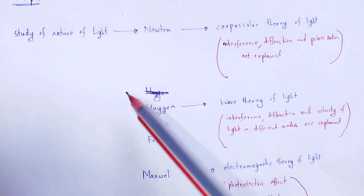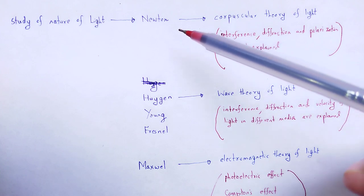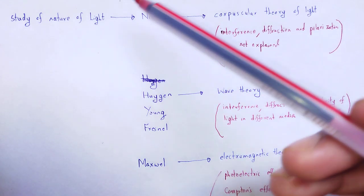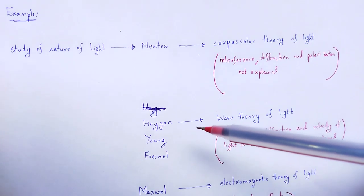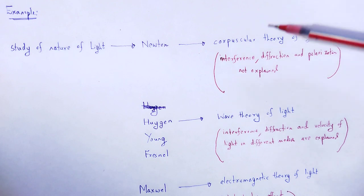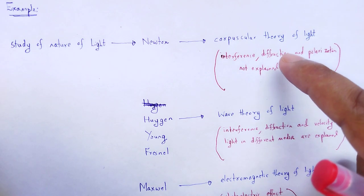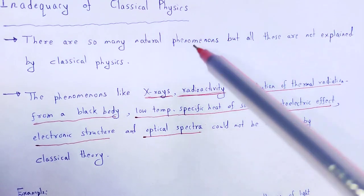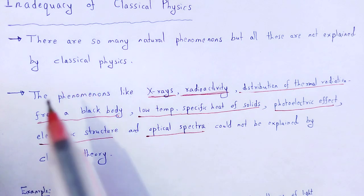This is an example of how the study of the nature of light has developed. According to various scientists and their theories, this shows us the progress in the study of the nature of light in different eras. By using that example, it is clear to us that classical physics is not sufficient to describe all such phenomena that occur in nature. So, we can say this is the inadequacy of classical physics.